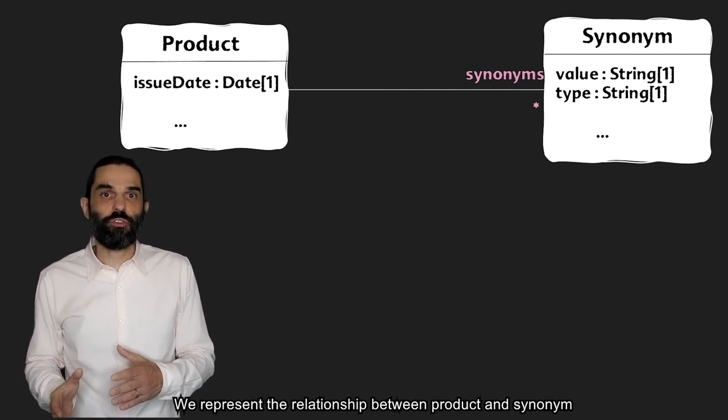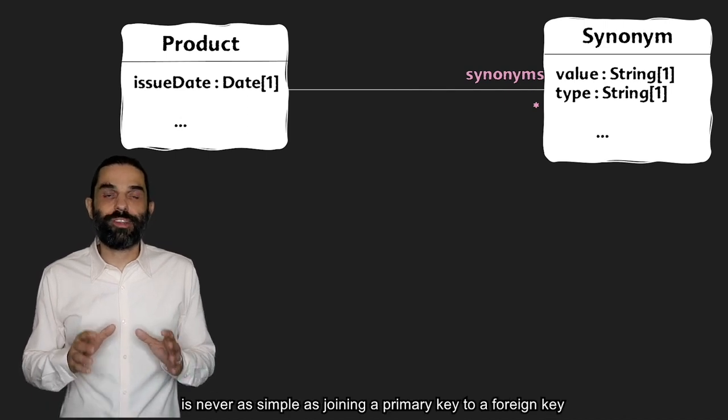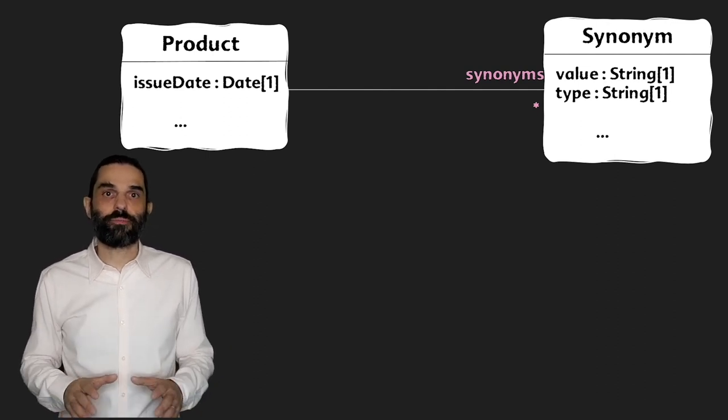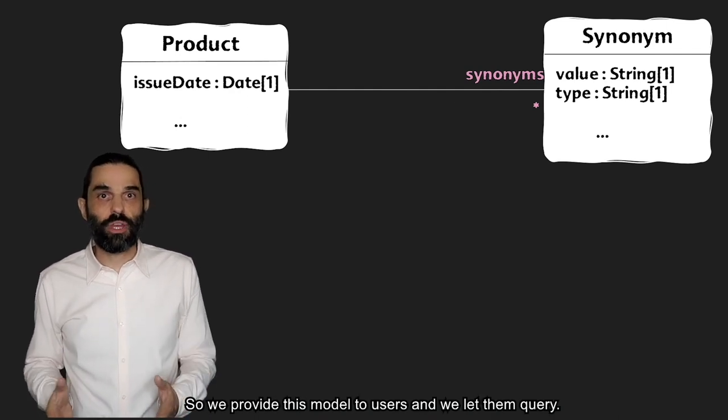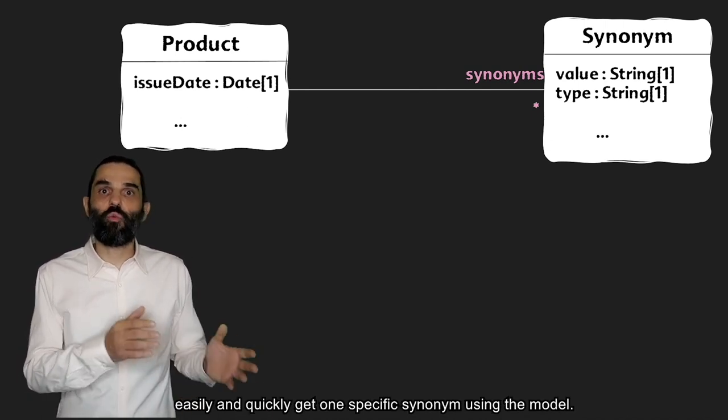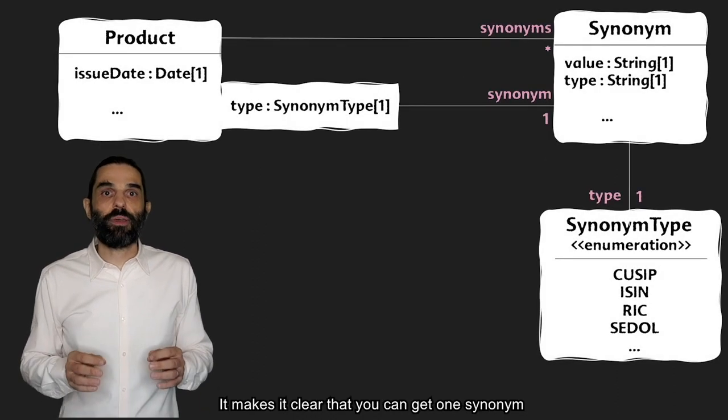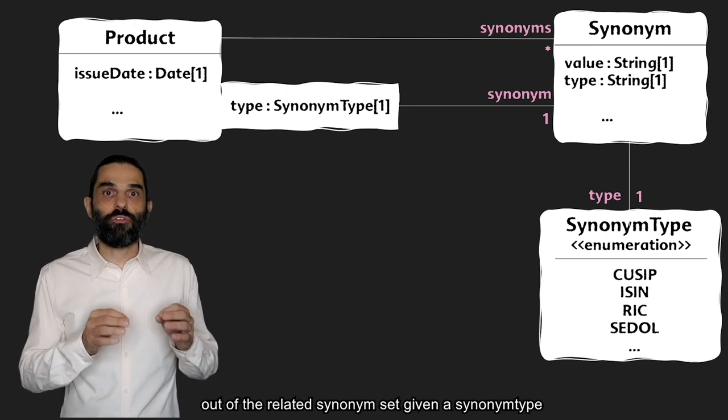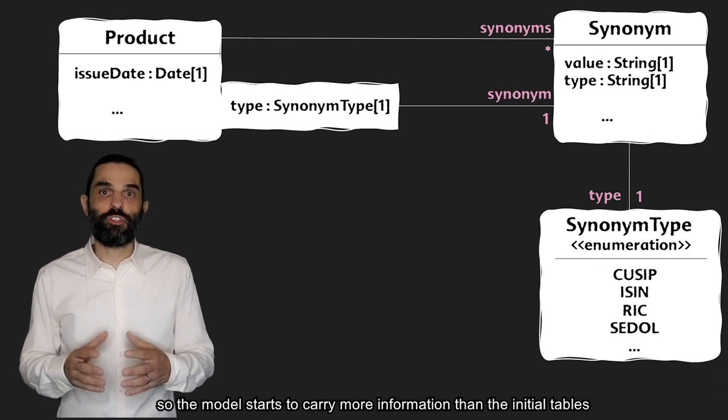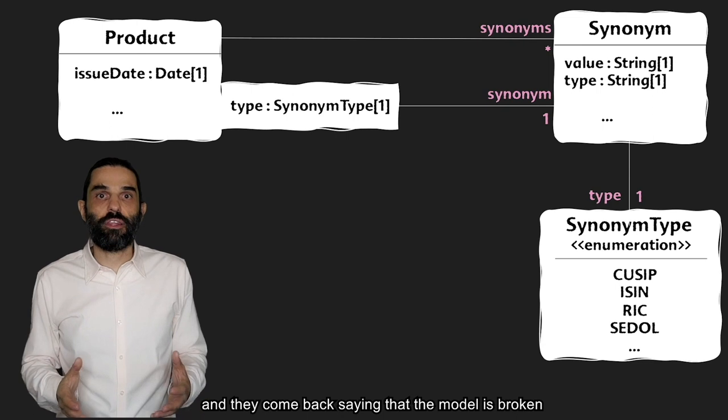We represent the relationship between product and synonyms as a property named synonyms. This is already interesting as joining two tables is never as simple as joining a primary key to a foreign key. There's always something else to think about. So we provide these models to users and we let them query. The first feedback is that they want to easily and quickly get one specific synonym using the model. So we can modify the model and add a qualifier. It makes it clear that you can get one synonym out of the related synonym set given a synonym type. So the model starts to carry more information than the initial tables.